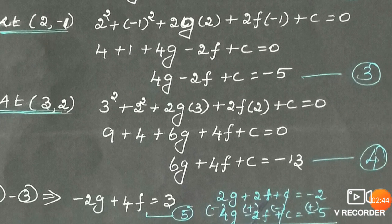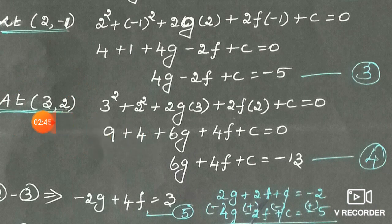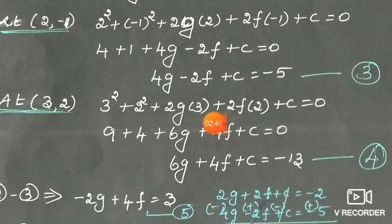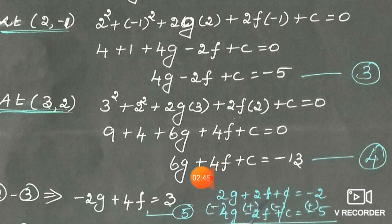Name it as equation 3. Now substitute the third point (3, 2). The point lies on the circle, so substitute x = 3 and y = 2 in the circle equation. x² = 3² = 9, y² = 2² = 4, plus 2g(3) + 2f(2) + c = 0. That is 9 + 4 + 6g + 4f + c = 0. Adding the numbers gives 13, so 6g + 4f + c = -13. Name it as equation 4.